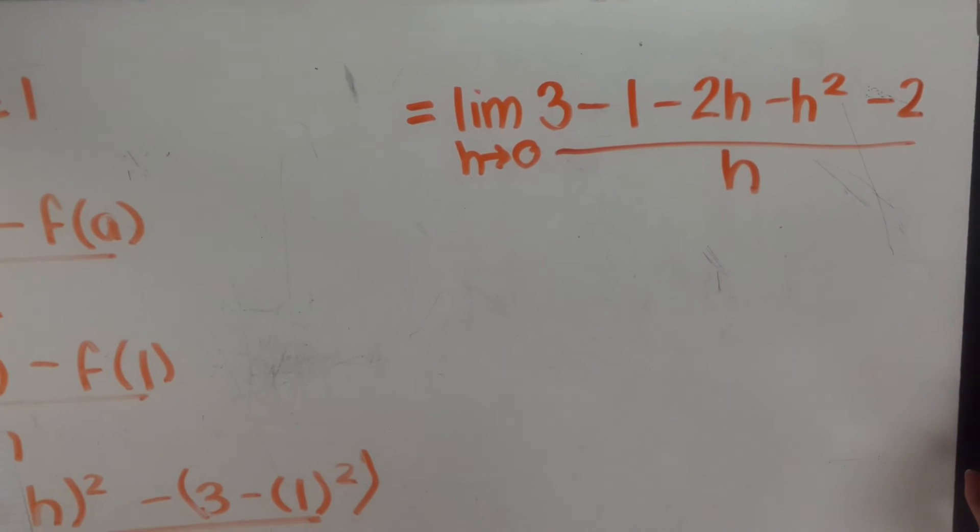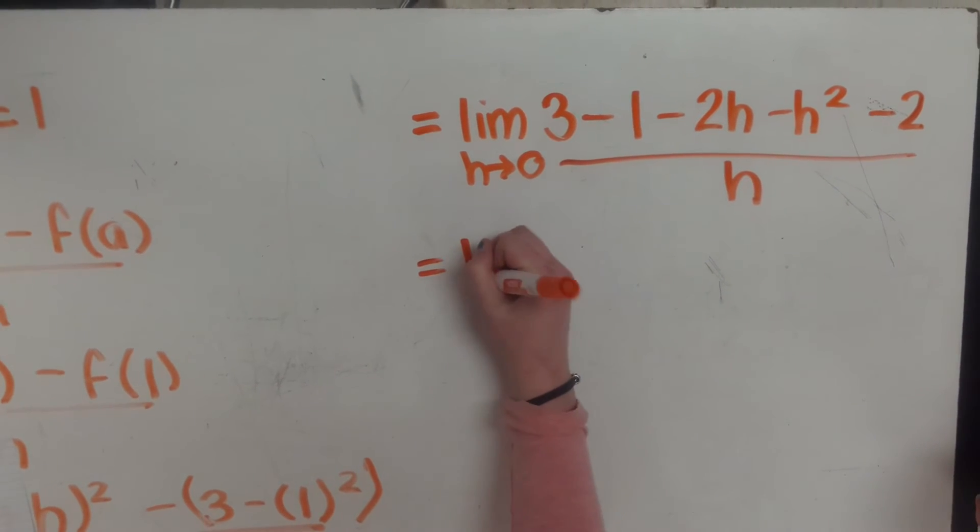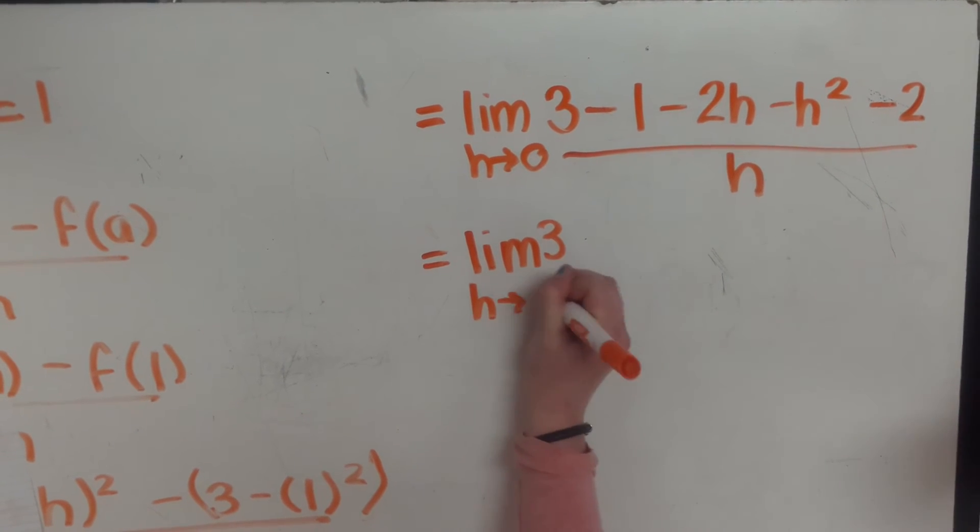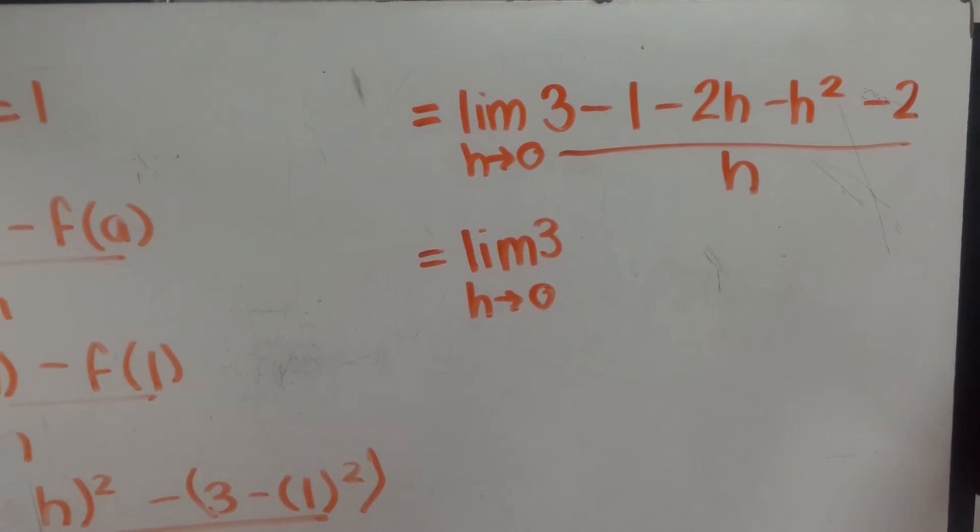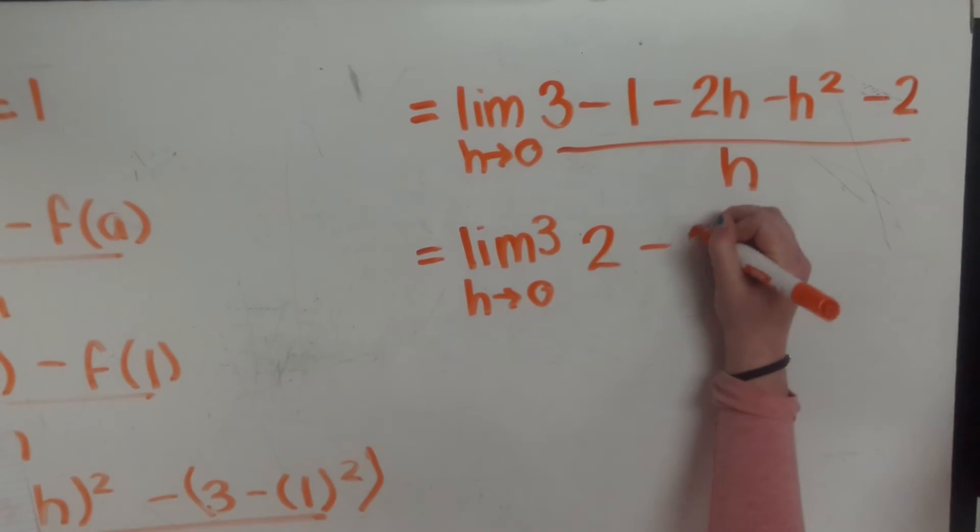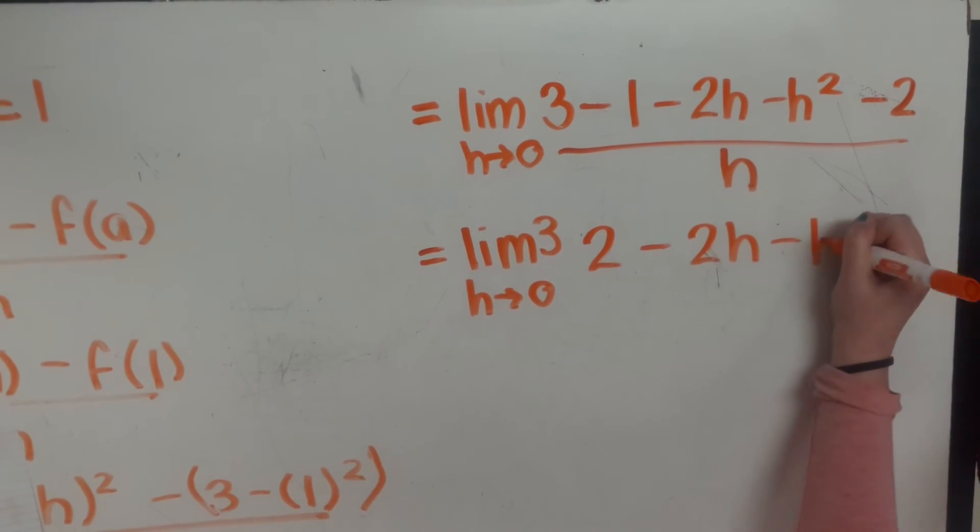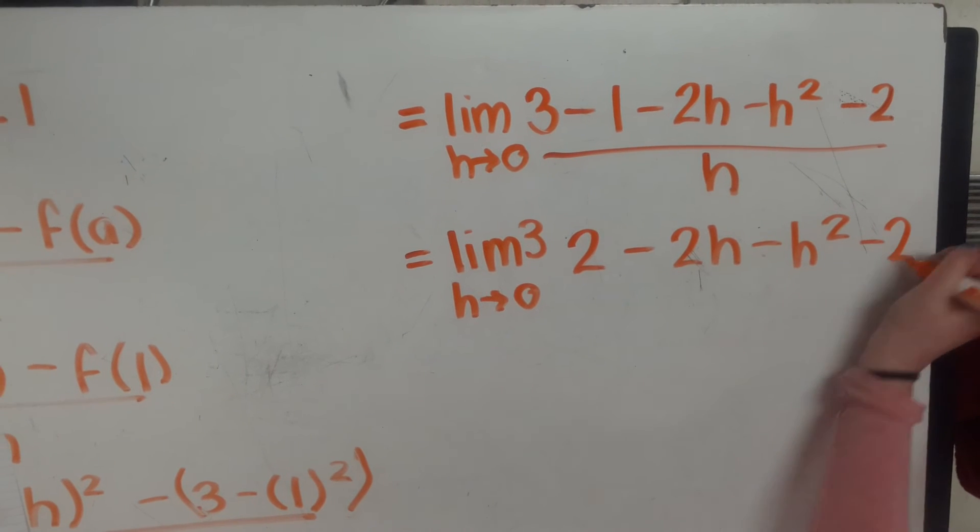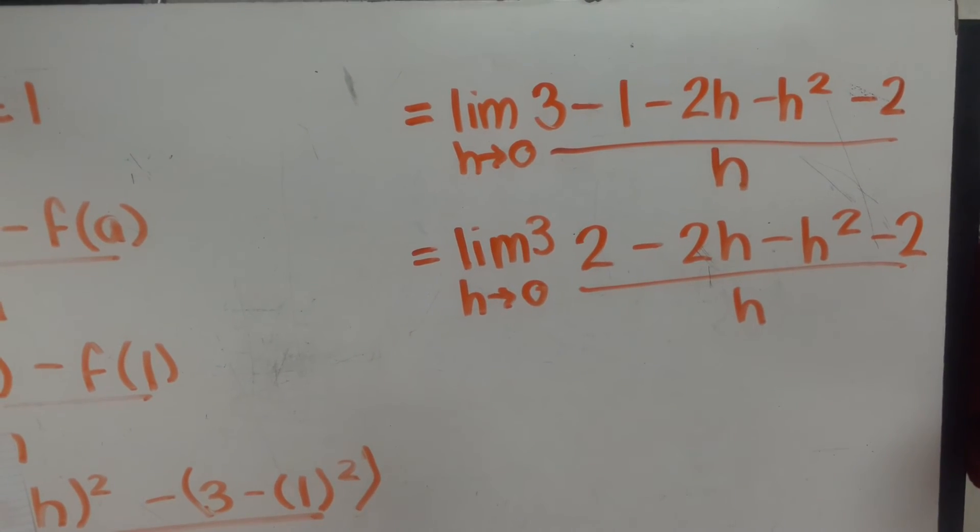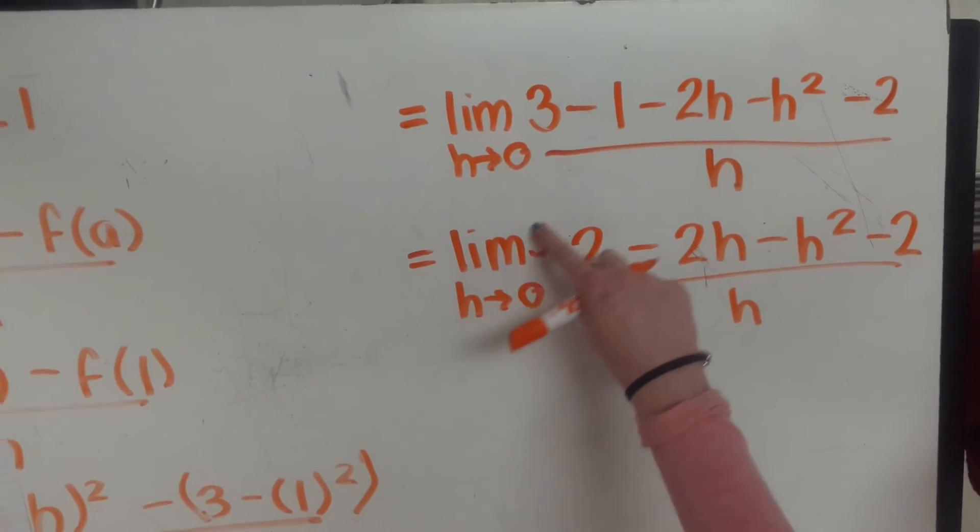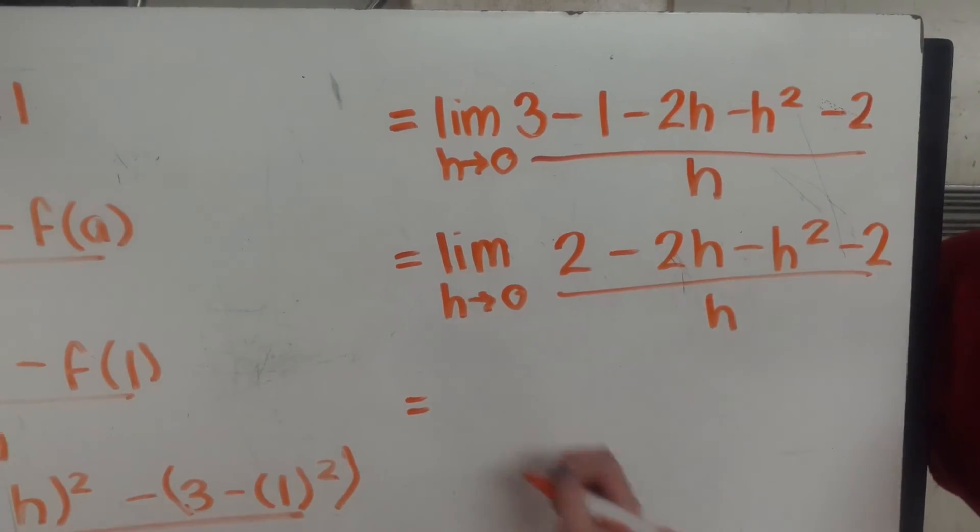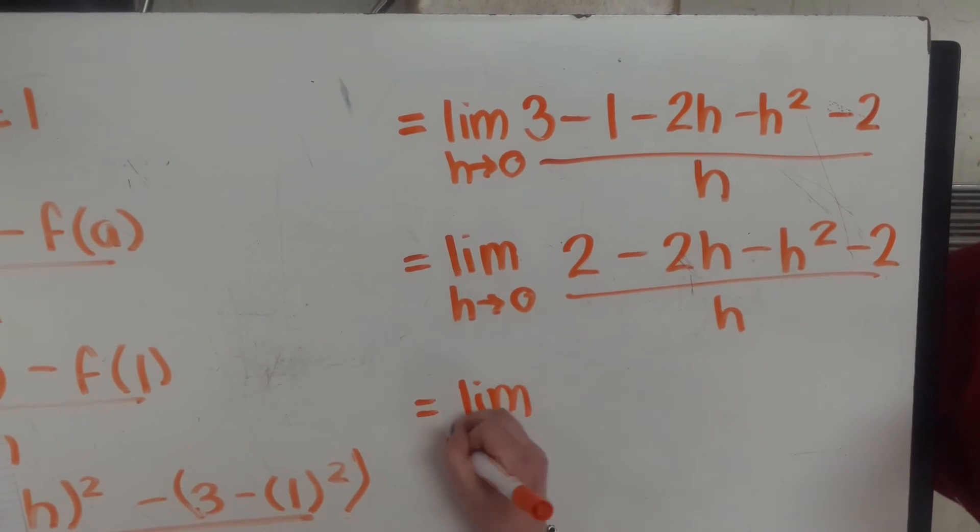No, it looks good. Just expanding and simplifying. So 3 minus 1 is 2. And you got an aberrant 3 that showed up right beside your limit. Oh. Thank you for pointing that out. And so we can simplify that.